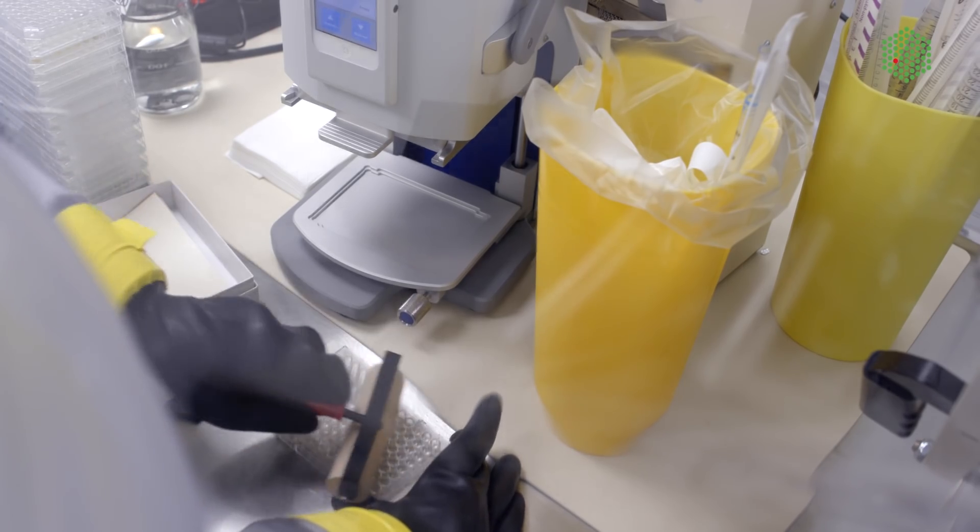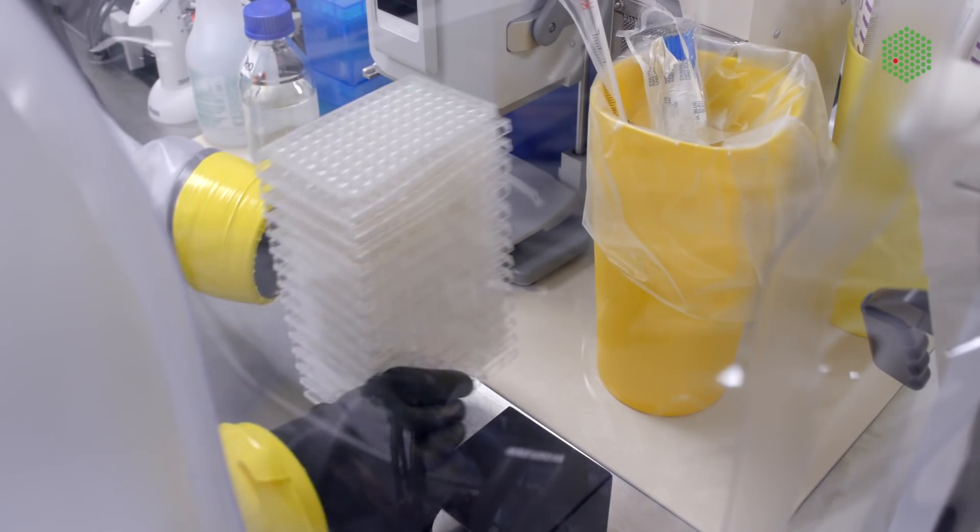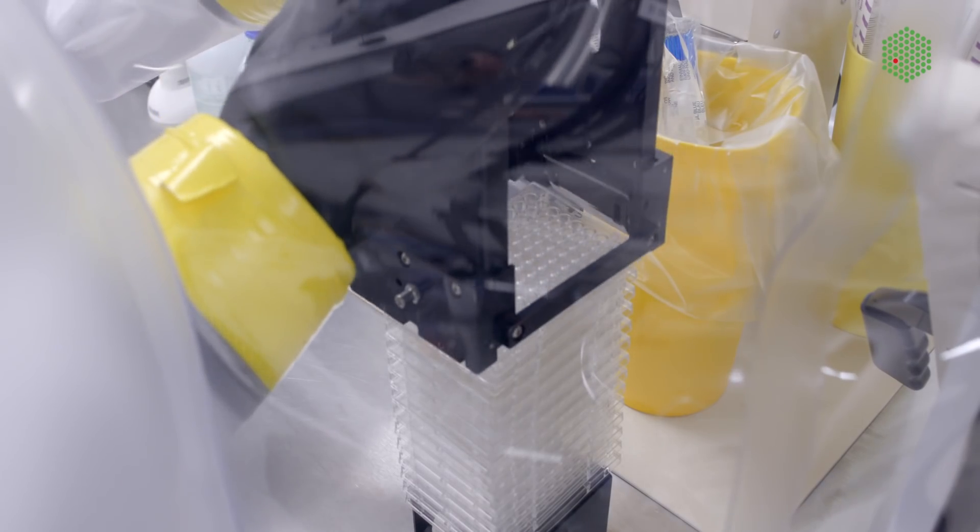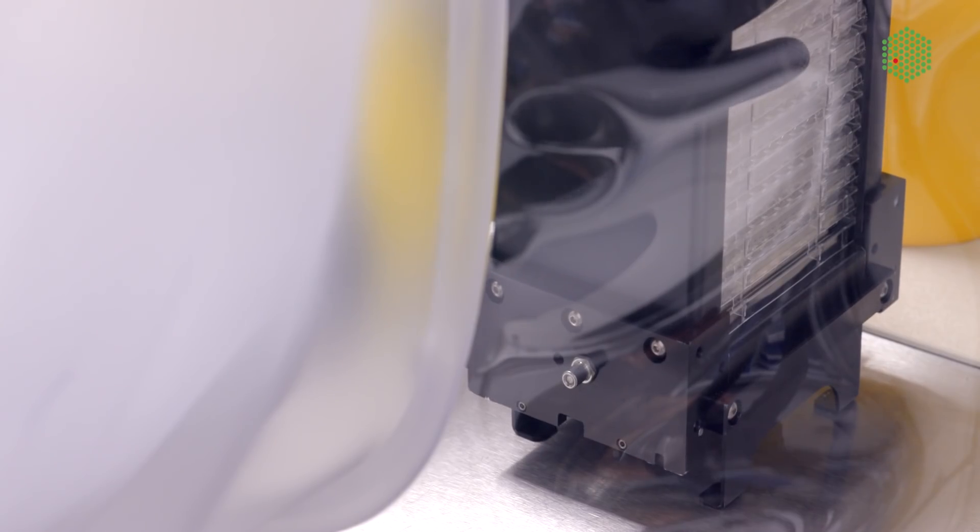Now we can start reading optical densities using a plate reader, which we also do inside the chamber. The plate reader can only fit one plate at a time, but luckily we have a micro-blade stacker to exchange the plates for us.